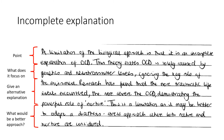A lot of students use incomplete explanation or reductionist paragraphs, and that's fine as long as they're done well. Start with the point — 'a limitation of the biological approach for OCD is that it is incomplete.' Then state what that theory focuses on: it states OCD is solely caused by genetics and neurotransmitter levels, ignoring the role of the environment. Then give an alternative explanation — researchers found that the more traumatic life events encountered, the more severe the OCD, demonstrating the powerful role of nurture. End by suggesting it might be better to adopt a diathesis-stress or interactionist approach where both nature and nurture are considered.